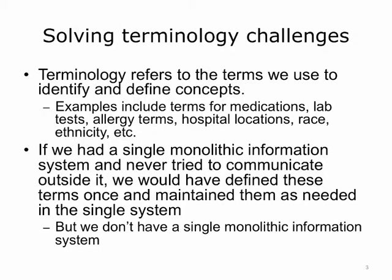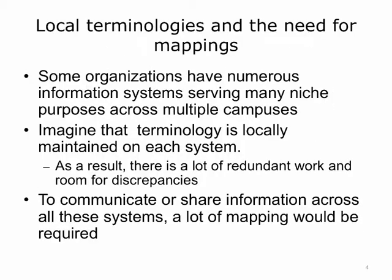However, we do not have a single information system, not even within one organization. So what you end up with is the need to manage terminology. There are numerous information systems that serve many niche purposes across multiple campuses, and each one of them may decide to manage the terminology themselves. With overlapping terminology locally maintained on each system, there could be a lot of redundant work, lots of room for discrepancies, and quite a bit of mapping. The more systems with local terminology that need to be mapped, the more semantic harmonization is required. The complexity of mappings will grow exponentially as you add more systems and terminology variants. Unfortunately, this problem has already occurred in many organizations and is especially severe as we try to map terms across organizations.